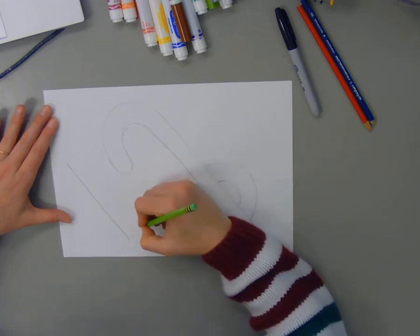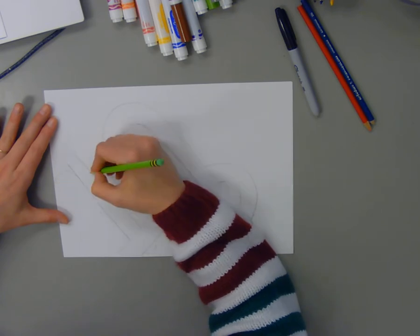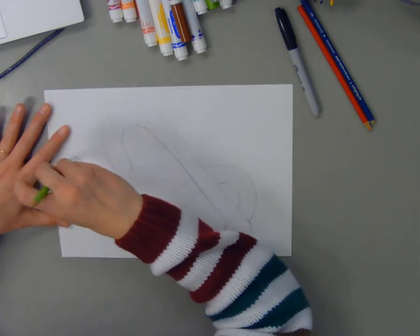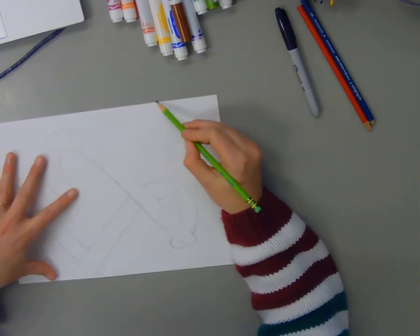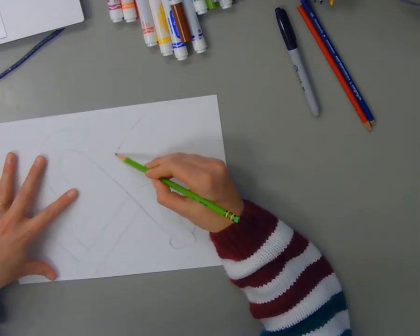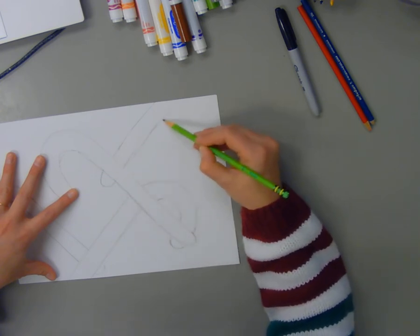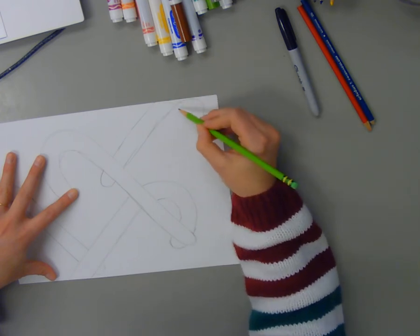And as I draw in my candy canes, I'm going to make some of them go off the page. We call that cropping, just to make it a little more interesting. And it also helps me kind of fill up the page better, because there's only so many full candy canes that I can fit on my page. So, as I'm drawing, I'm kind of planning out how to fill my space.